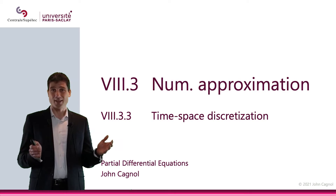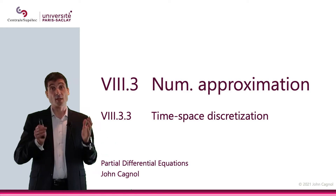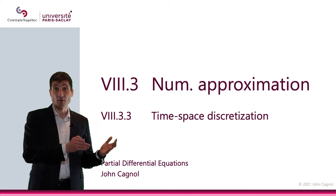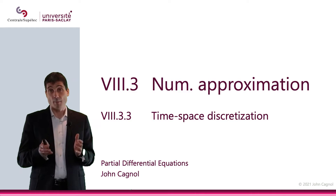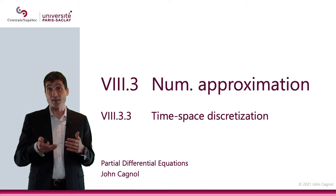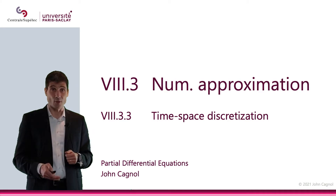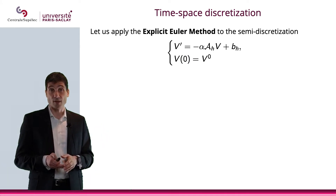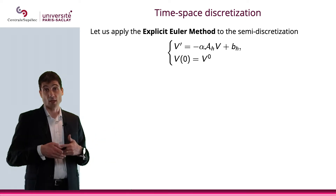In the two previous videos we did a discretization of the space domain while leaving the time domain alone. We could do this either using the finite difference method — that was the first video — or the finite element method — that was the second video. But no matter what we did, we ended up with an initial value problem, and we're going to deal with it in this video. We're going to consider v' = -α A_h v + b_h with v(0) = v_0, coming from the initial condition.